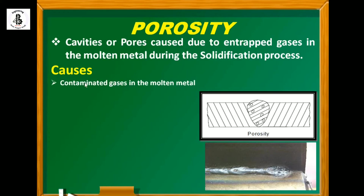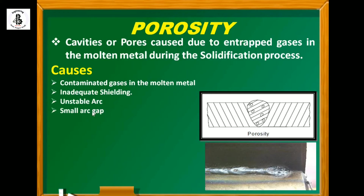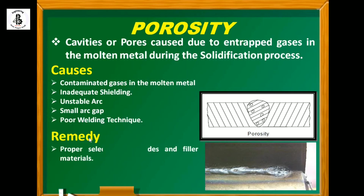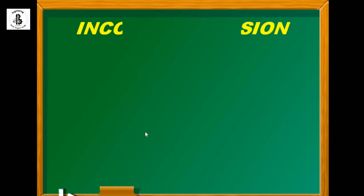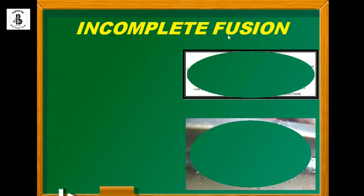The causes of porosity include contaminated gases in the molten metal, inadequate shielding, unstable arc, small arc gap, and over-welding techniques. The remedies for porosity include proper selection of electrodes and filler materials, and decreasing the speed of the welding torch.